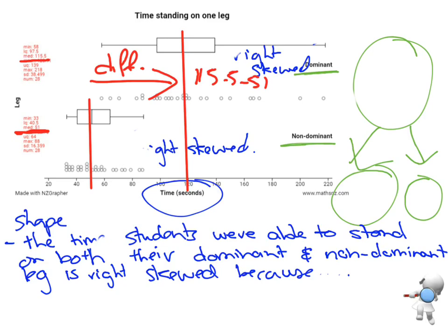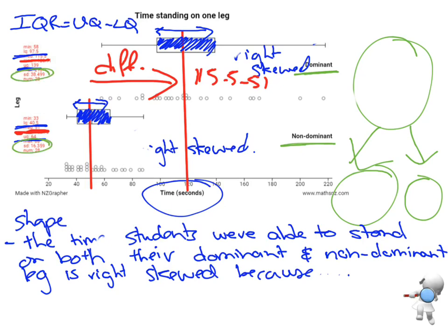Then the other part is our spread. I want you to think about how spread out the data is. Think about just the box - how wide that box there is and how wide that box there is. We should be able to see that this box here is not as wide as that box there. To back that up, I can do my interquartile range. Remember, interquartile range is upper quartile minus lower quartile. So I can do upper quartile minus lower quartile for the dominant leg and upper quartile minus lower quartile for the non-dominant leg. Equally, I could also look at the standard deviation and compare those standard deviations as well.